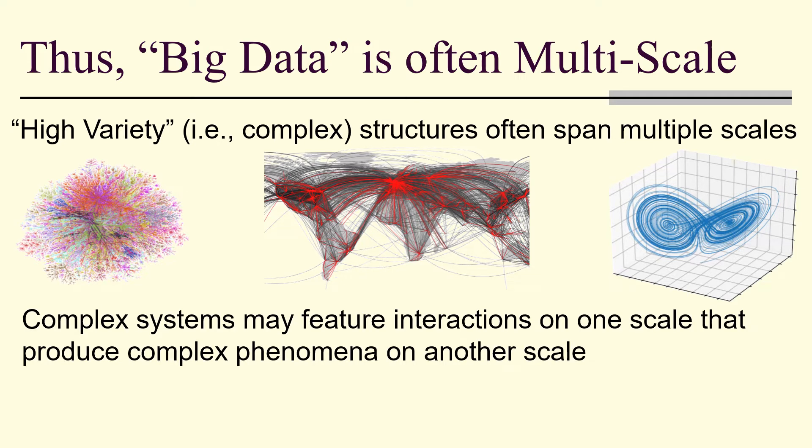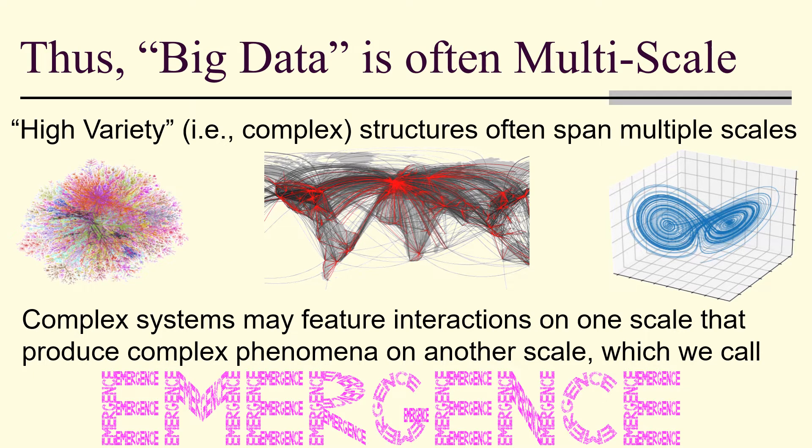Big data is often multi-scale. These high variety complex structures have many different scales. Complex systems often have interactions on one scale that produce complex phenomena on another scale. We call that emergence.